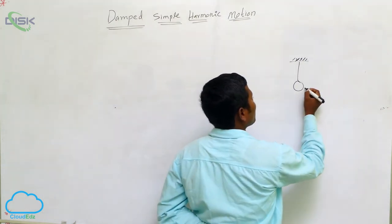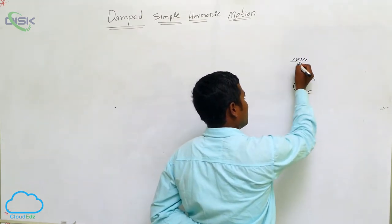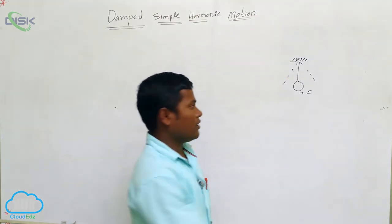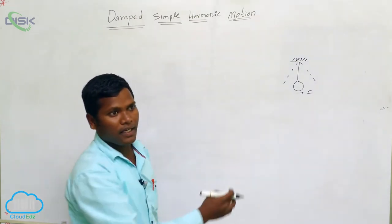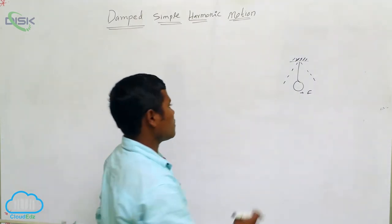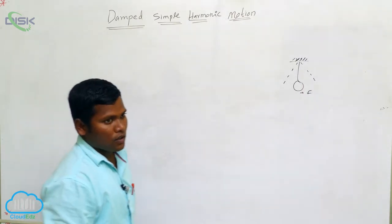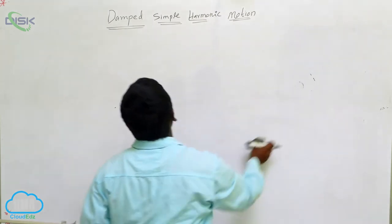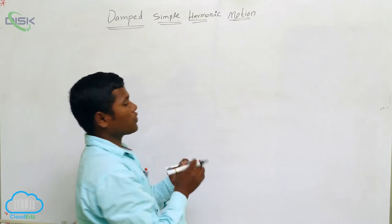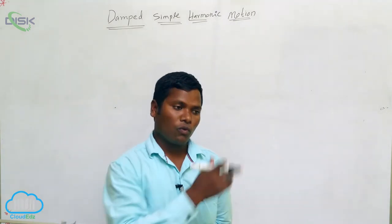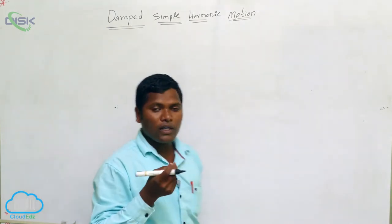If I apply some force and pull it up to a position, then release it, it makes oscillations — moving back and forth. This is simple harmonic motion. Now when we come to damped simple harmonic motion, the same oscillations occur but with one extra term.